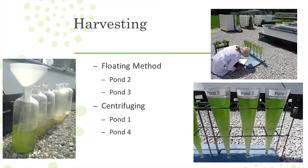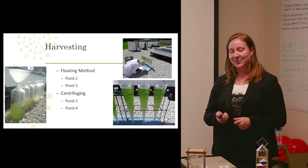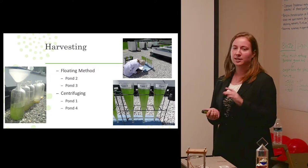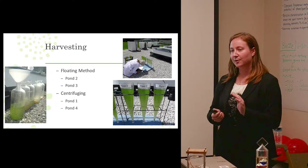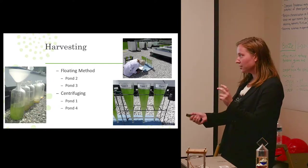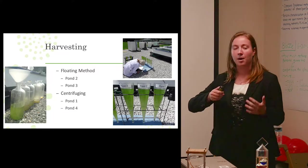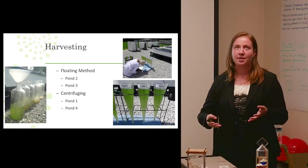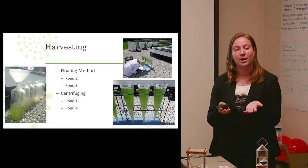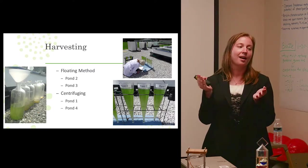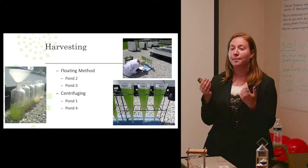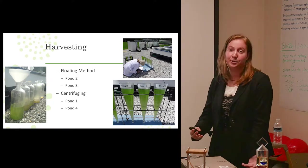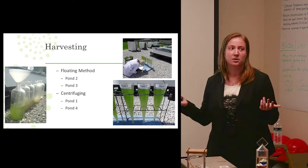So now that we have all of this algal biomass, we need to harvest it. So the way in which we did that is we used a method called floating on ponds two and three, and I'll explain why in a minute. And what exactly floating is, is we have these carboys, these large jugs, and we filled them up with the pond water. And because of the photosynthesis of the algae, the O2 that is being produced will actually cause the microalgae to rise to the surface and we're able to skim off a more concentrated biomass. And what that means is less centrifuging and less energy intensive and less time intensive as well because it takes a long time to centrifuge.